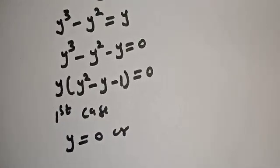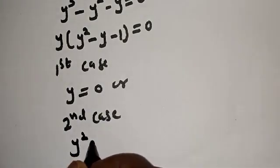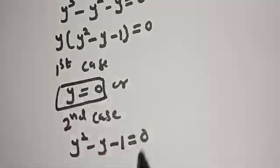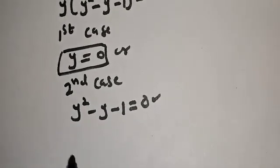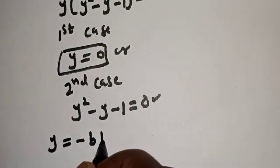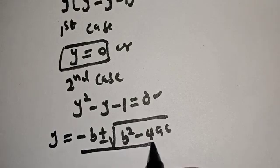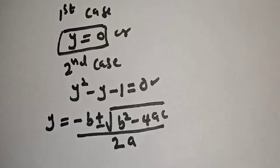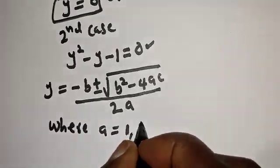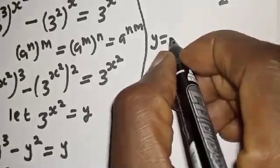So y squared minus y minus 1 equals zero. There are two cases. First case: y equals zero. Second case: y squared minus y minus 1 equals zero. The second is a quadratic equation solved using the quadratic formula: y equals negative b plus or minus square root of b squared minus 4ac, all over 2a. Here a equals 1, b equals negative 1, c equals negative 1.